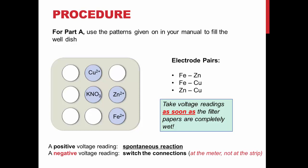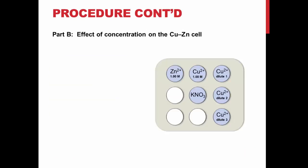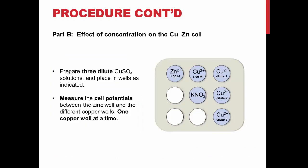You will also prepare three diluted copper solutions to measure the effect of concentration on the voltage. Arrange the wells as shown on the slide, or page 16-9 of your lab manual, and measure the different potentials between the zinc cell and the four different concentrations of copper.